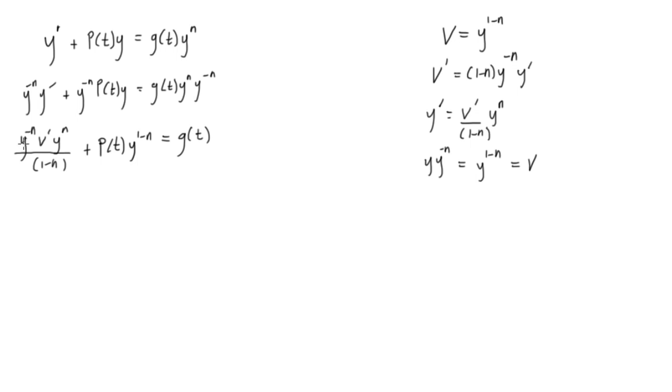Now we can go through and cancel out these y's here, so we'll have v prime over 1 minus n. Those two, the y to the minus n and y to the n canceled out. Now we have p of t, and y to the power of 1 minus n is equal to v, our new variable. So let's just call it v. This is equal to g of t.